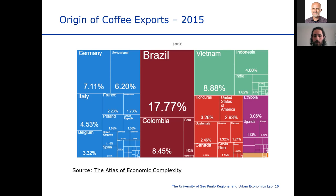Vietnam produces only Robusta beans, and Brazil produces Arabica beans, same as Colombia. Even though Brazil produces more than double the quantity, when it comes to quality, Colombian coffee has higher quality. The harvesting process is fundamentally different: on the same branch of a coffee tree, you have fruits of different sizes and ripeness. Brazil basically takes them all out at once and roasts them together, whereas in Colombia they separate fruits by size and ripeness, which makes it taste substantially better.